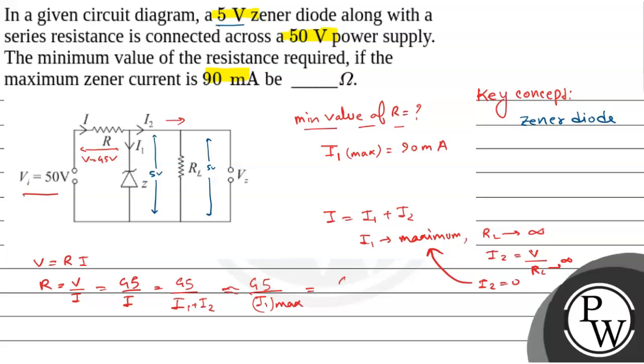Now I1 max is 45 by 90 milliampere, that is times 10 to the power minus 3. This equals 500 ohm.